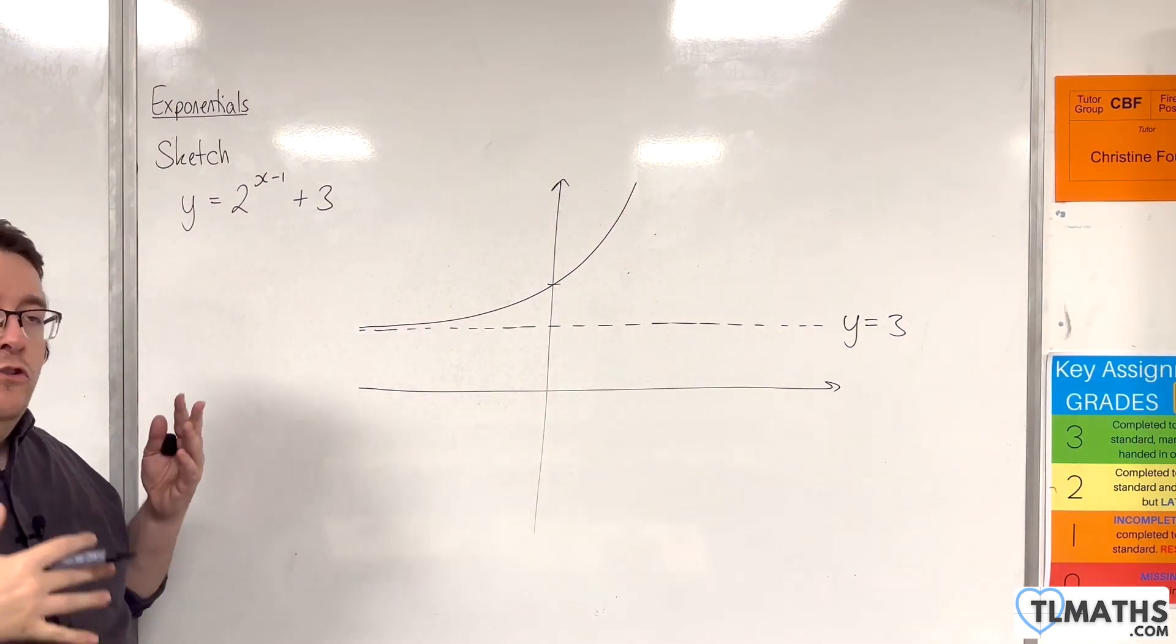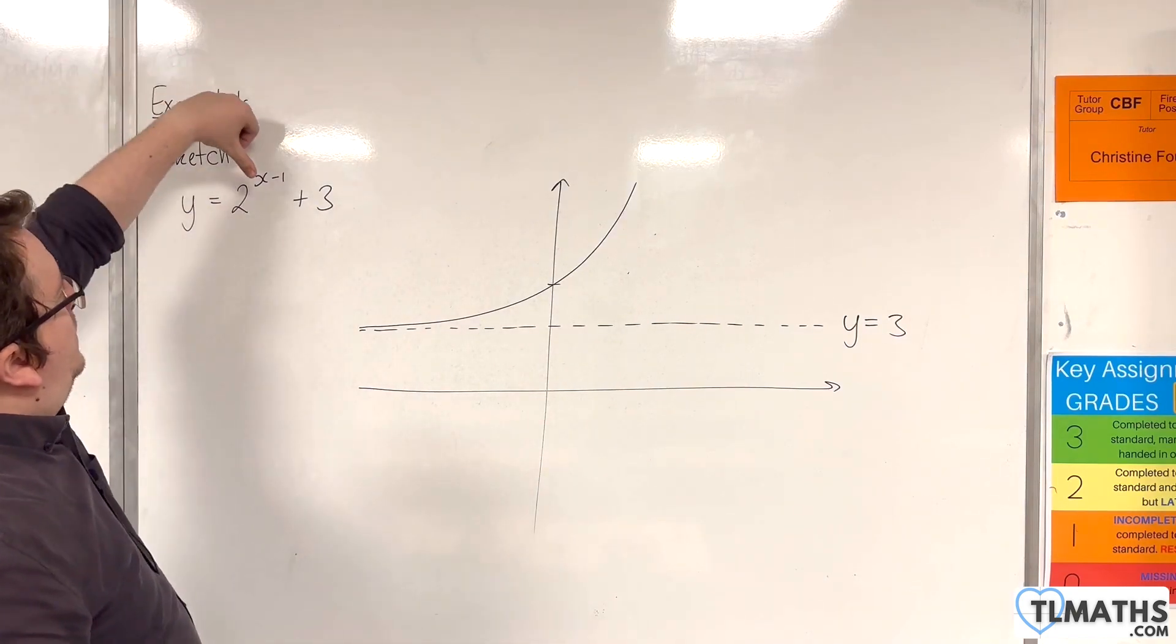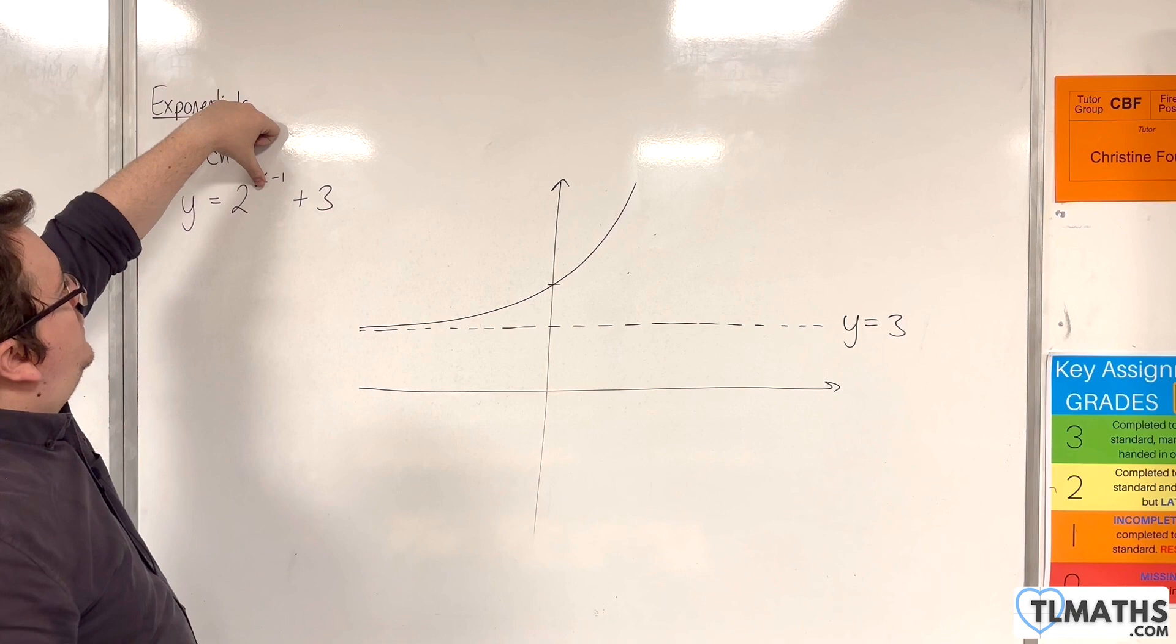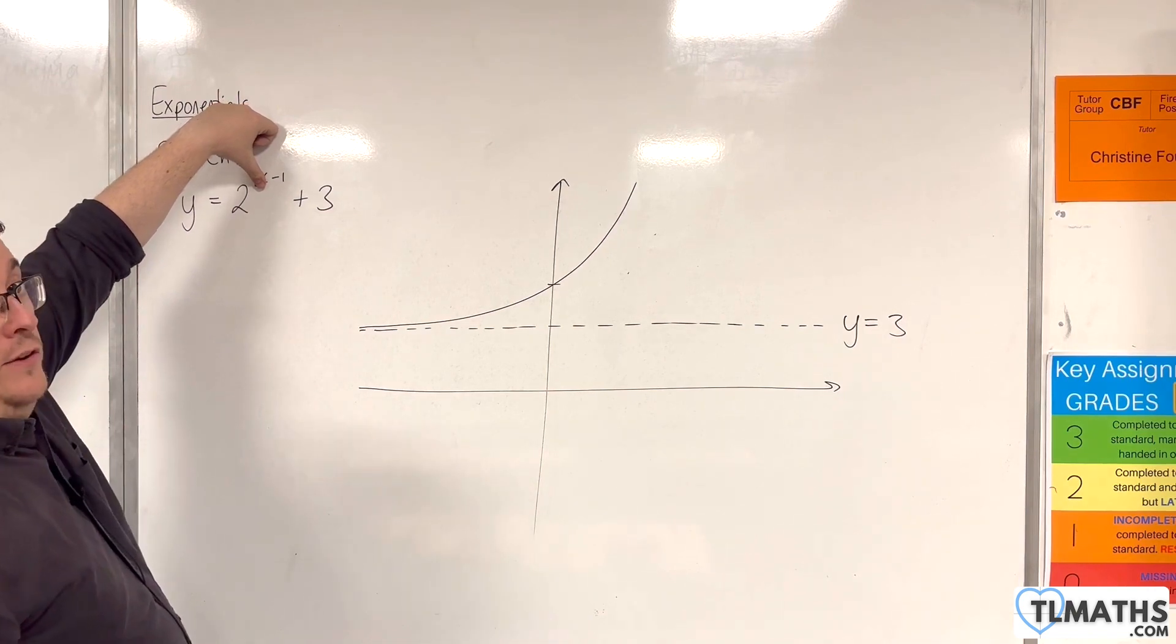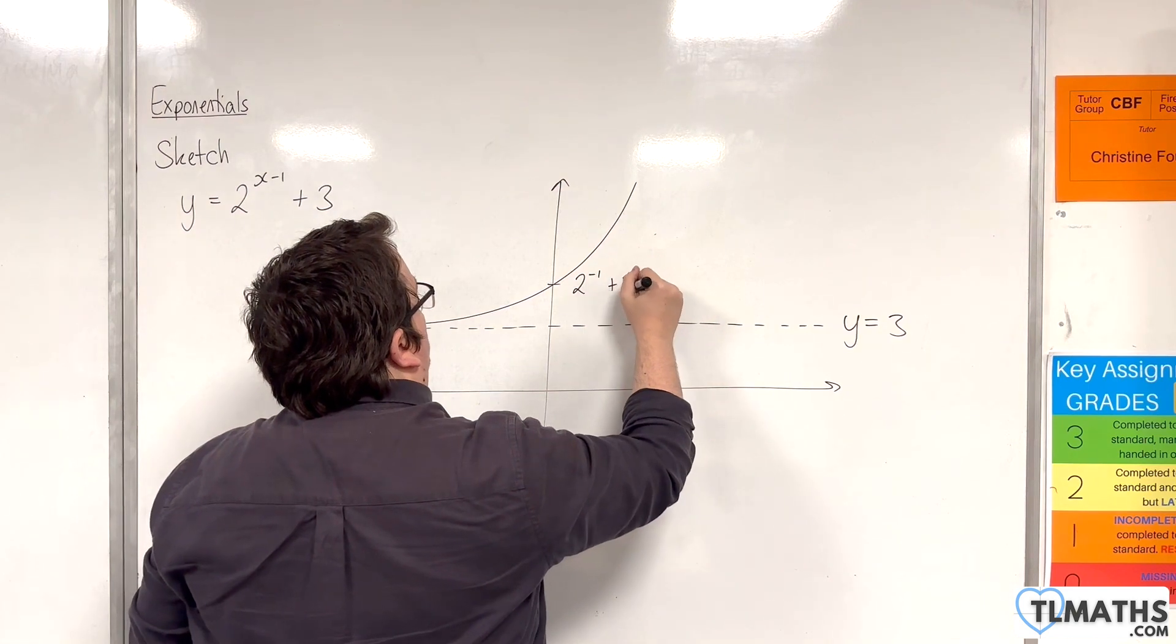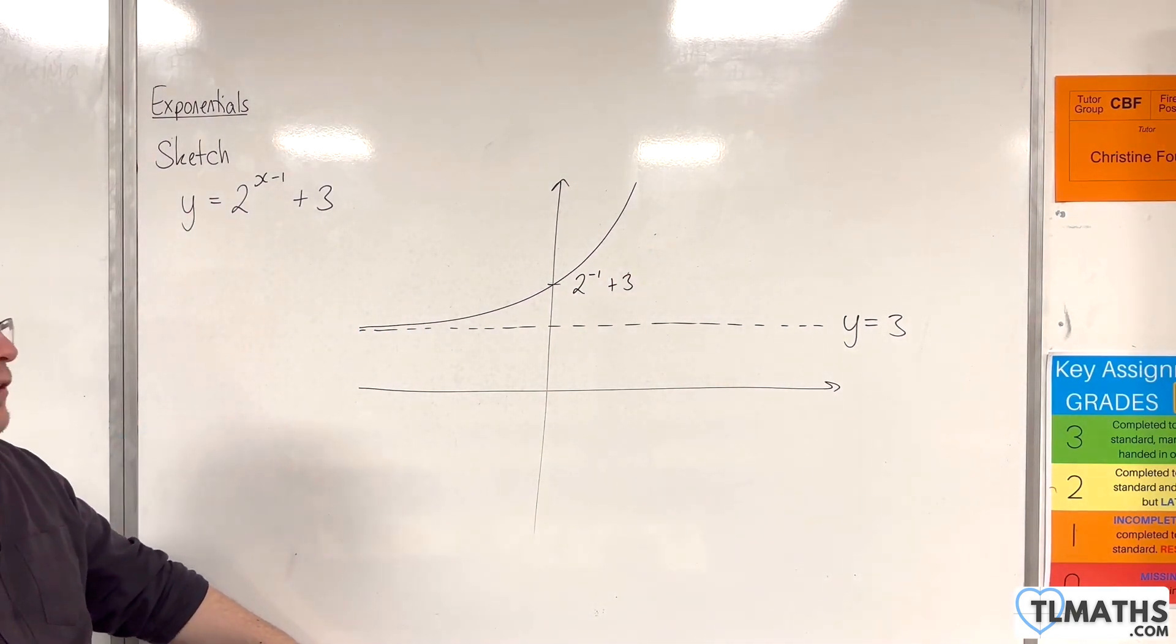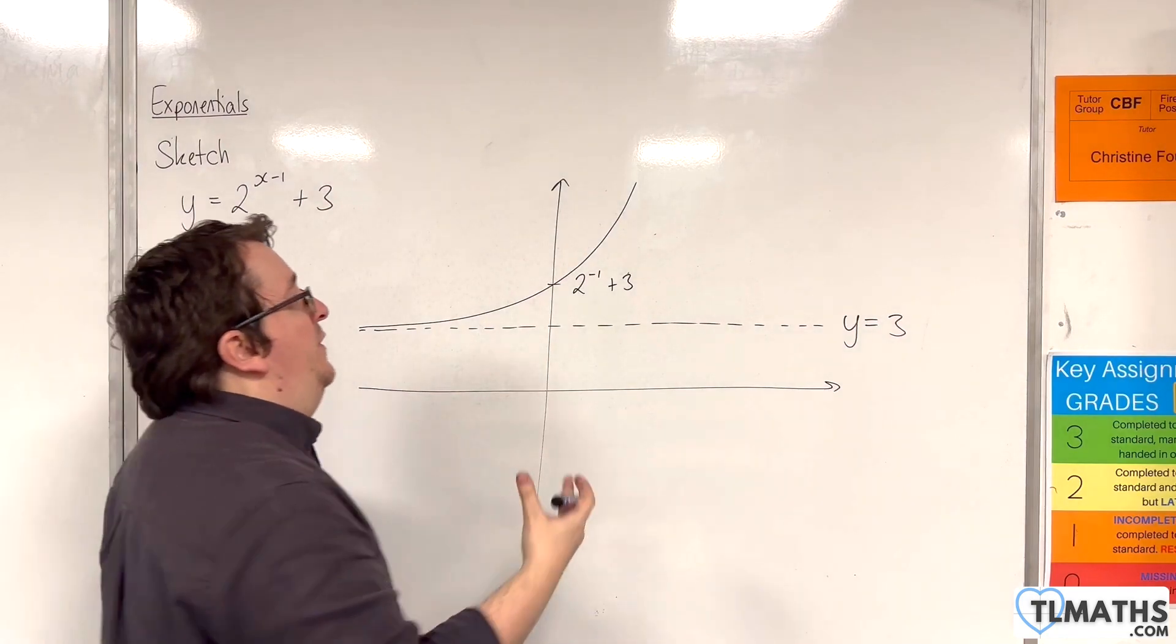We just need to work out where it crosses the y-axis, which is when x is 0. Now, when x is 0, we're going to have 2 to the minus 1 plus 3. Now, that's the same as 1 half plus 3, so 3.5 or 7 halves.